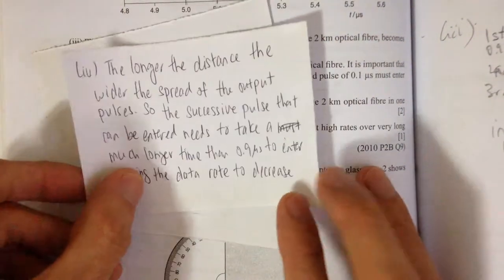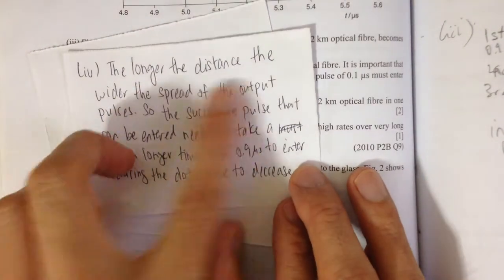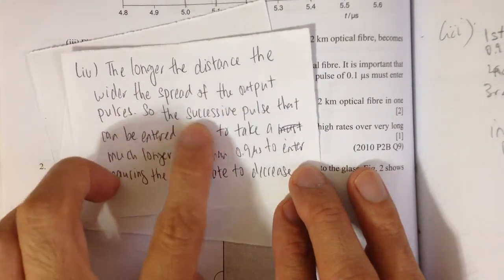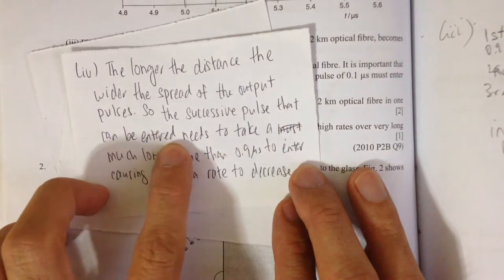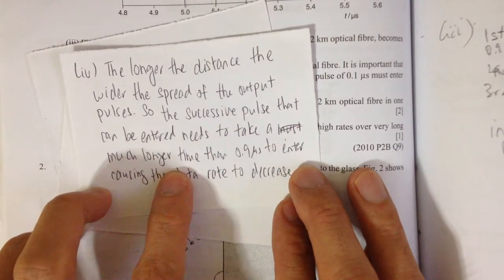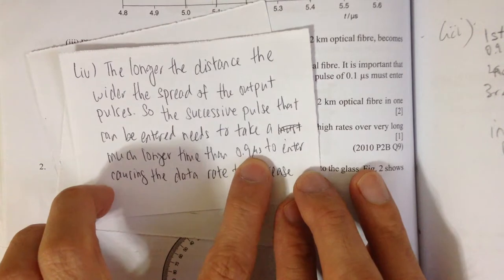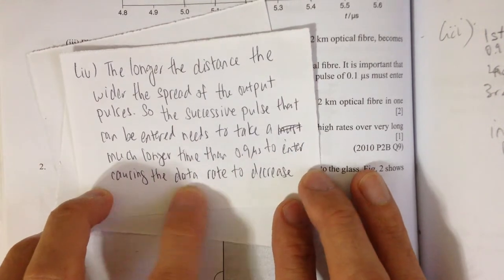So in order to answer this question, that's how I will put it. The longer the distance, the wider the spread of the output pulses, so the successive pulse that can be entered needs to take a much longer time than 0.9 microseconds to enter, causing the data rate to decrease.